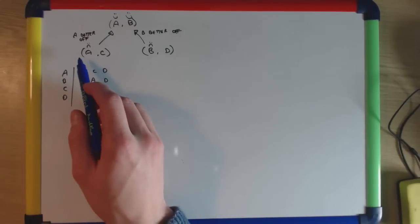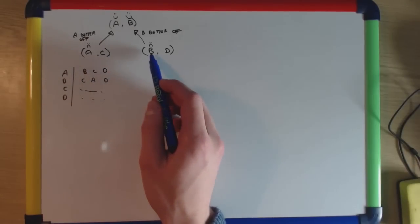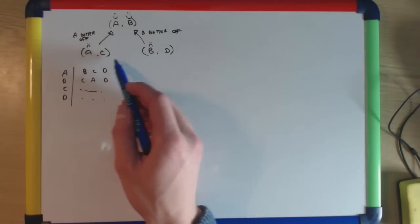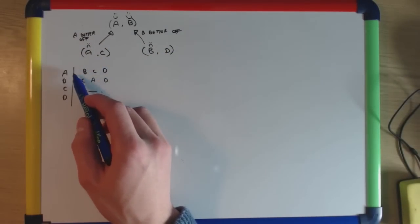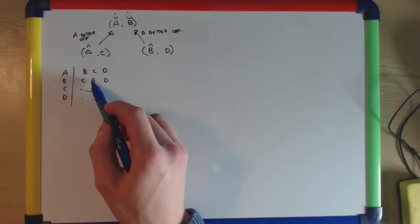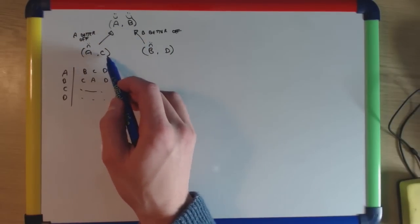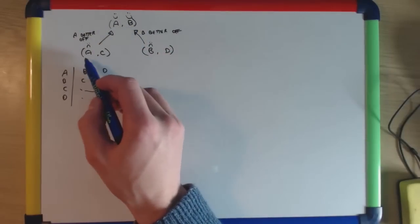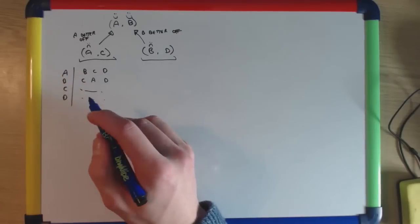Stability is a property of a set of matchings. Take for example a match between person A and C, and person B and D. If A prefers B to C, a more stable matching would be where A was with B, providing B preferred A to his current match. In this case B does, so A and B would be a more stable match than A-C and B-D. If we have any pairs like this in our result, then that set of matchings is non-stable.